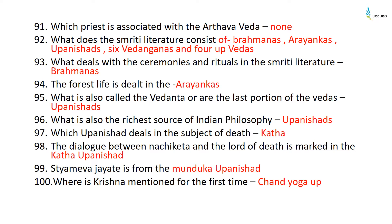The Smriti literature consists of Brahmanas, Aranyakas, Upanishads, six Vedangas, and four Upvedas. Brahmanas deal with ceremonies and rituals in Smriti literature. The Aranyakas deal with forest life. The Upanishads are also called the Vedanta, or the last portion of the Vedas, and are also the richest source of Indian philosophy.